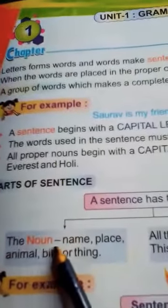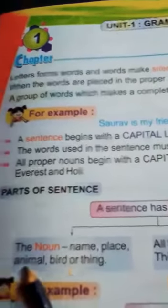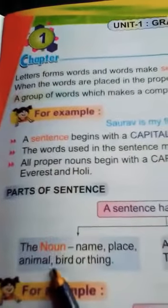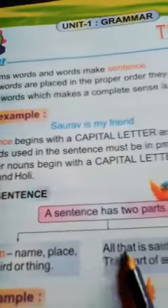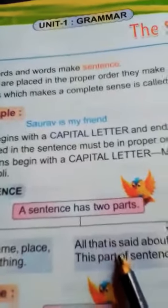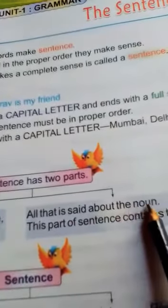Part 1: The noun — a name of a person, place, animal, bird, or thing. All that is said about the noun is contained in the other part of the sentence.